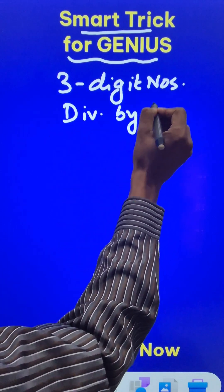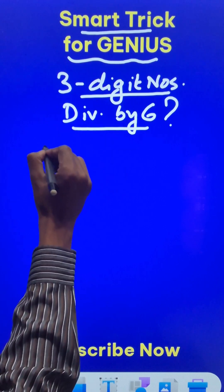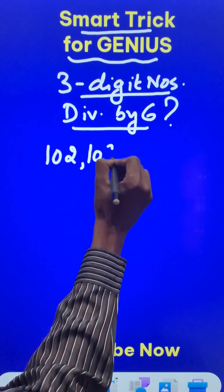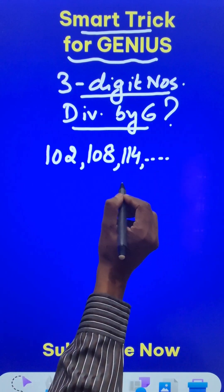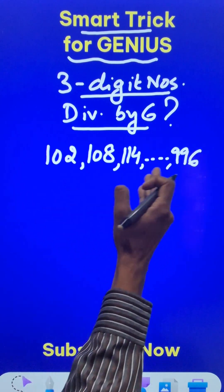So I'll write divisible by 6. How many 3-digit numbers are divisible by 6? First of all, let us identify that 102 is the first number, followed by 108, then plus 6, 114, and this continues up to 996. Now this forms an arithmetic progression.